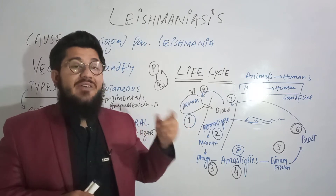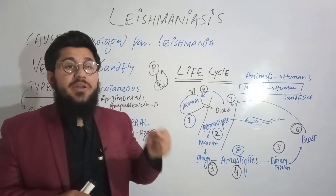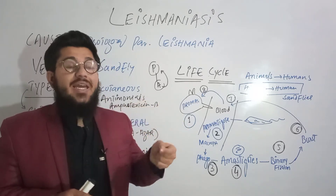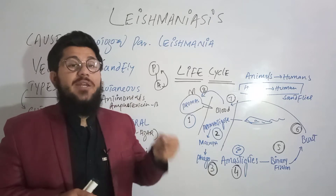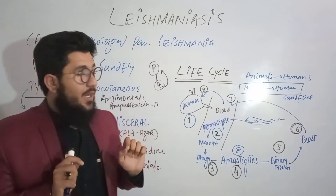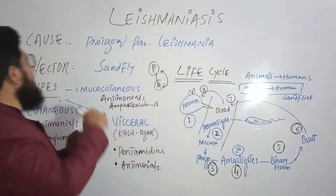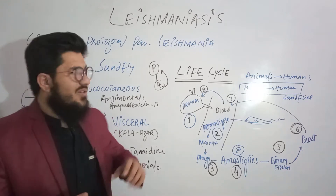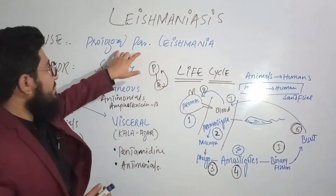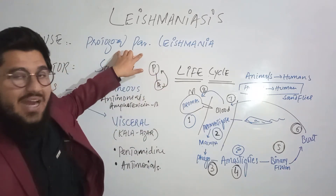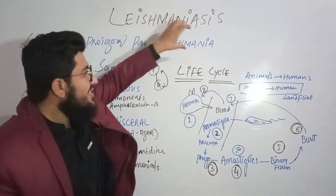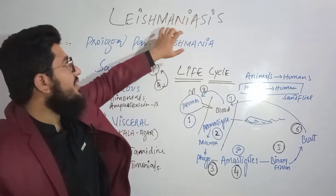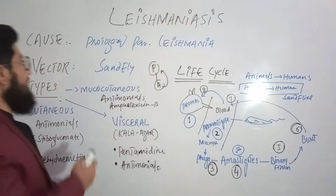Leishmaniasis is a disease caused by a protozoal parasite affecting your skin, your mucous membrane, your spleen, your liver, and bone marrow. Now, what is the main cause of Leishmaniasis? It is a protozoal parasite named Leishmania. Because of this Leishmania, the disease is known as Leishmaniasis.